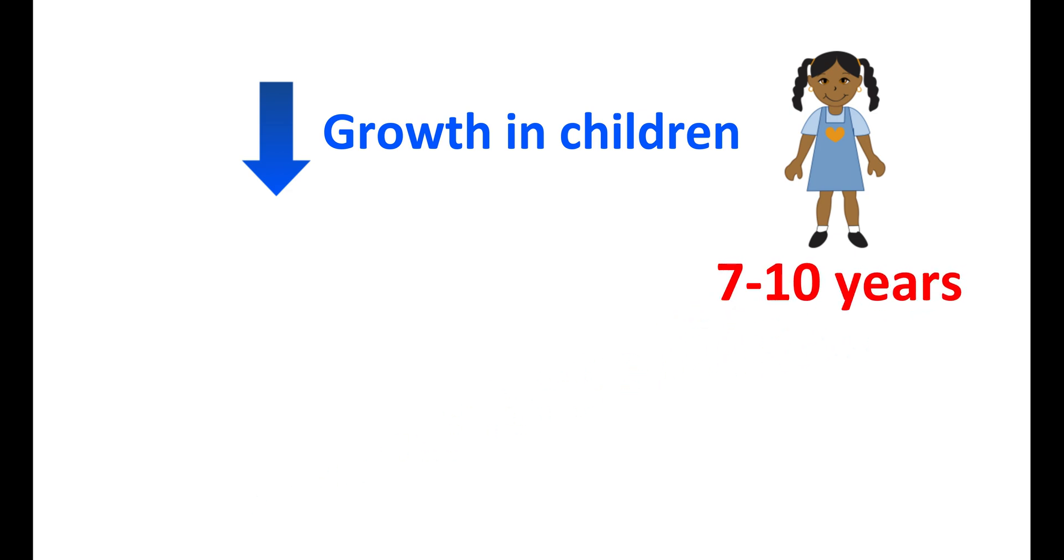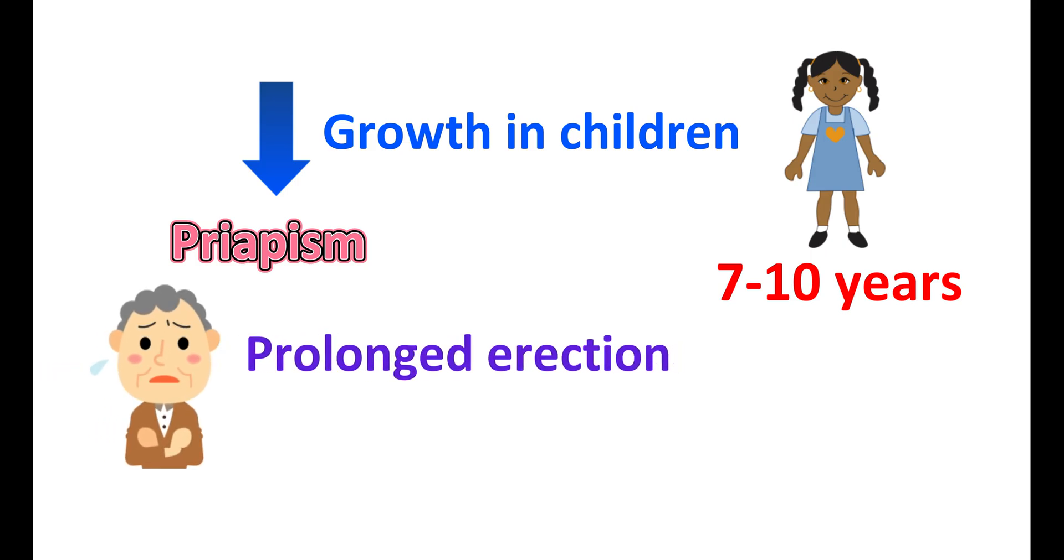This medication can produce the condition priapism, which may result in prolonged erection in men with delayed ejaculation. Even though this condition is very rare, it may produce sexual dysfunction in men which may further complicate the symptoms of ADHD. If any such dysfunction is observed, this drug may be discontinued.